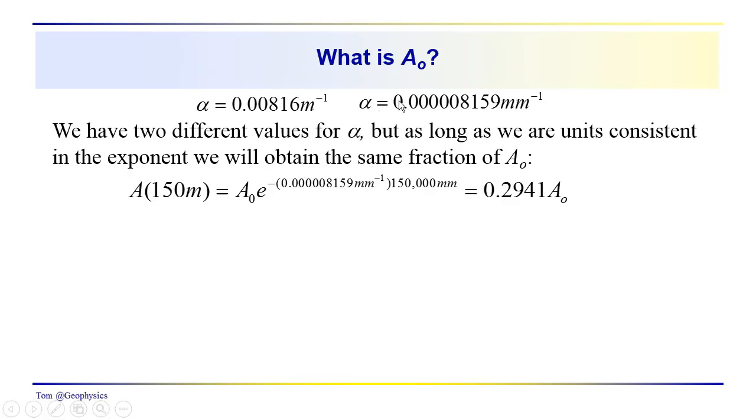So we have these two different values of alpha. And a question that you might not have thought about, that you might want to take a few minutes and pause the video. If you haven't already determined, what is A0? When you go through the calculations to figure out, you know what A at 150 meters is, you know it's 0.0665 millimeters. Unless you know what A0 is, we know what this is. We know that this is going to be 0.2941 times A0. But what is A0?